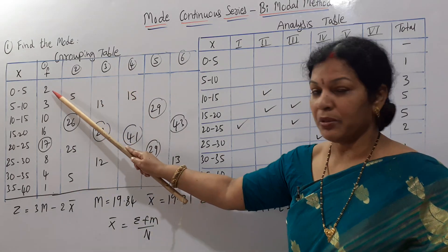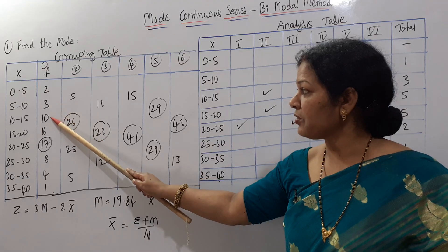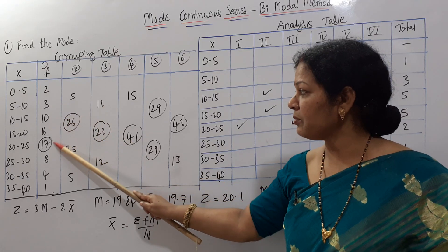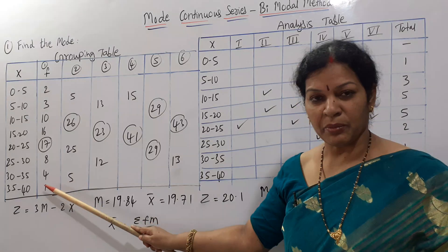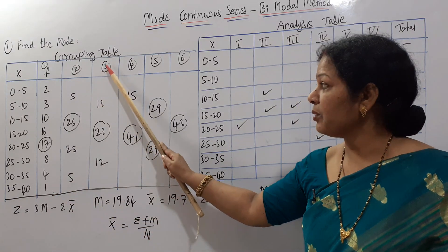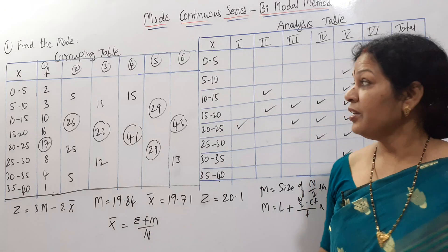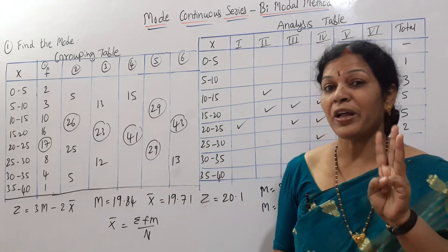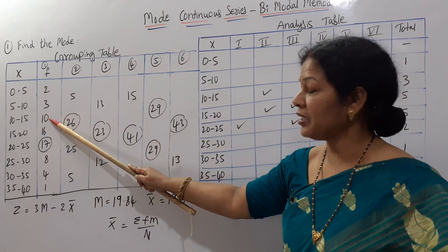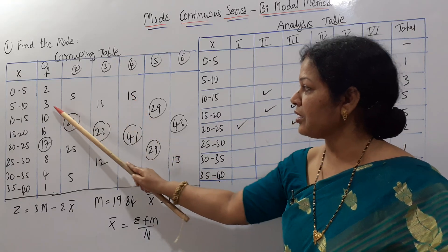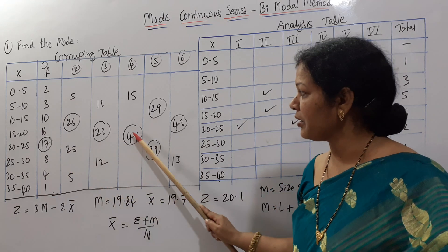In the third column, we adjust the numbers starting from the second value: 10 plus 3 is 13; 16 plus 17 is 33; 8 plus 4 is 12. In the fourth column, we add three consecutive values: 2 plus 3 plus 10 is 15; 16 plus 17 plus 8 is 41.